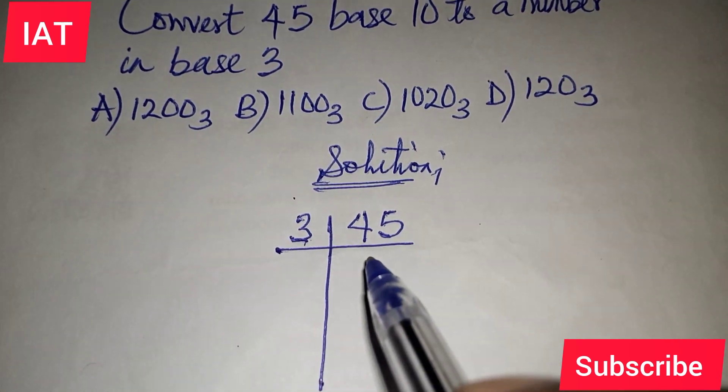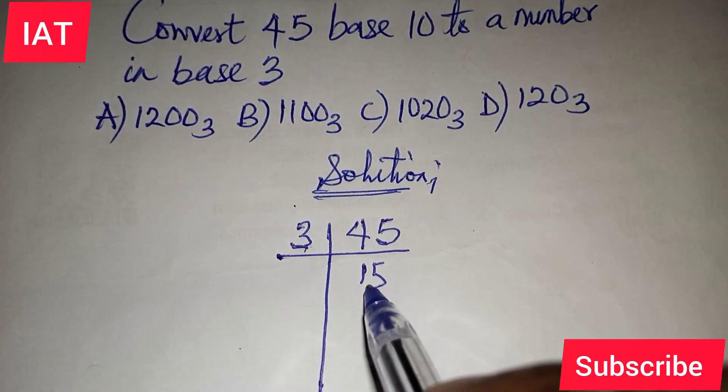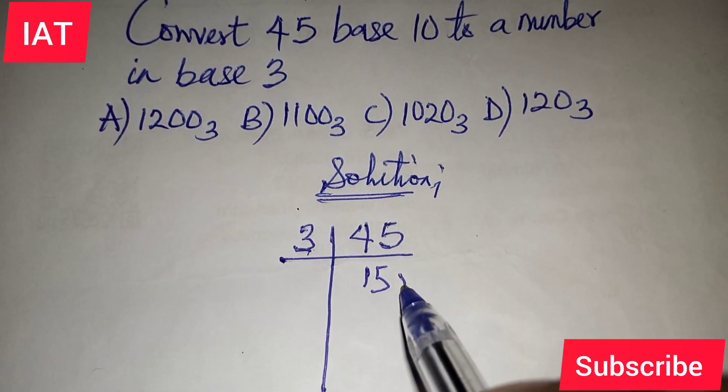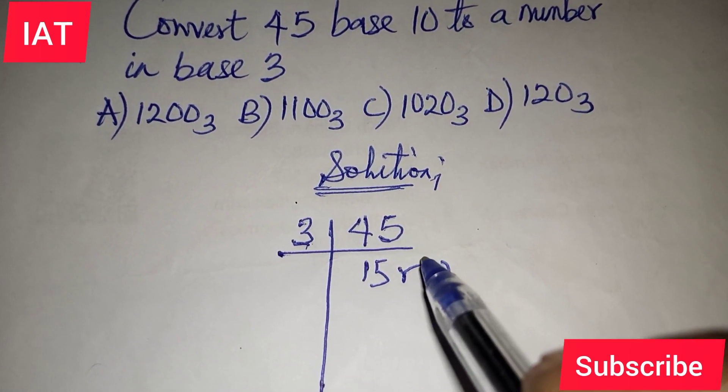So 3 goes into 45 how many times? It should be 15 times because 3 times 15 will give you 45 and there is no remainder. So we just put remainder 0 because there is no remainder.